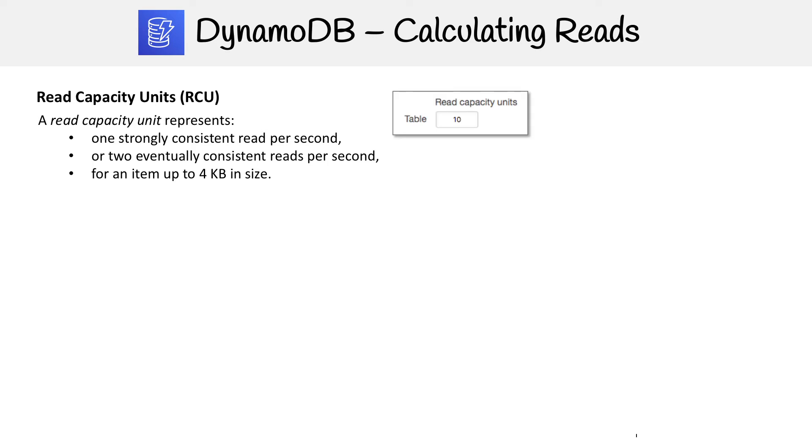So the whole point is figuring out what to put in this box. And so if we had data that was four kilobytes or less at 10, this would equal 10 strongly consistent reads or 20 eventually consistent reads.